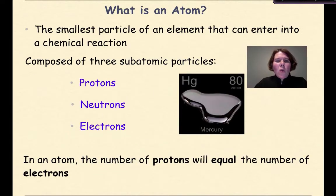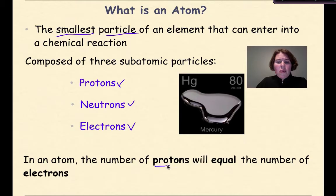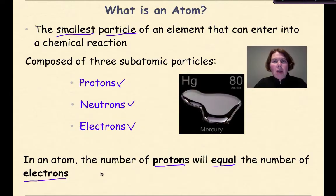So let's first talk about what is an atom. Remember that an atom is the smallest particle of an element that can enter into a chemical reaction, and an atom is composed of three subatomic particles: protons, neutrons, and electrons. Remember that in an atom, the number of protons will always equal the number of electrons. It's extremely important. So if you hear the word atom, protons and electrons will always be equal to each other.